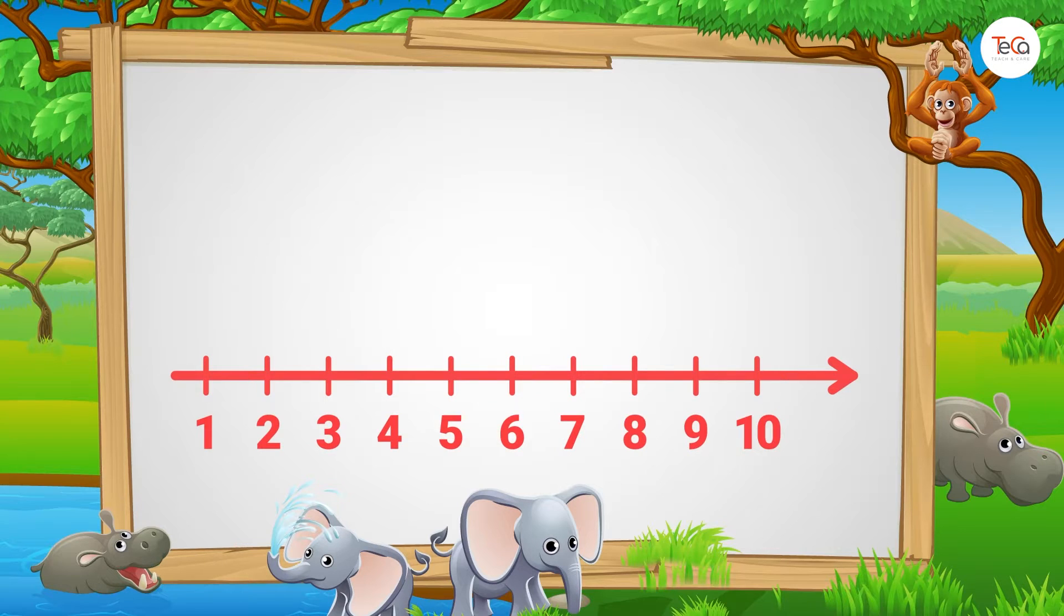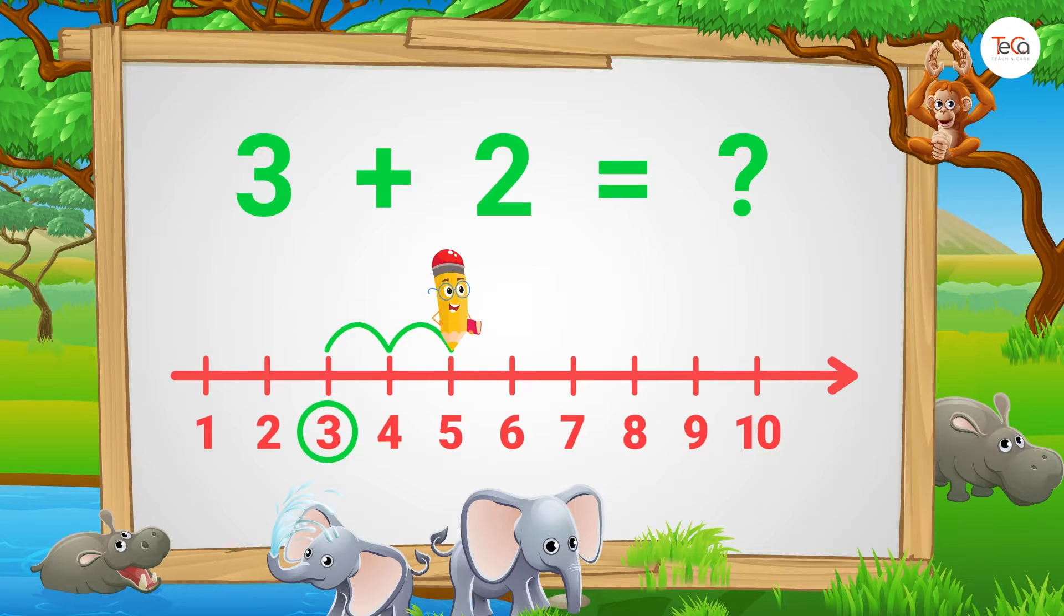To find 3 plus 2, we start from number 3. Then jump two numbers to the right. Then see the number where we stop to find the sum. Here, we stop at number 5. So, 3 plus 2 equals 5. Easy peasy!